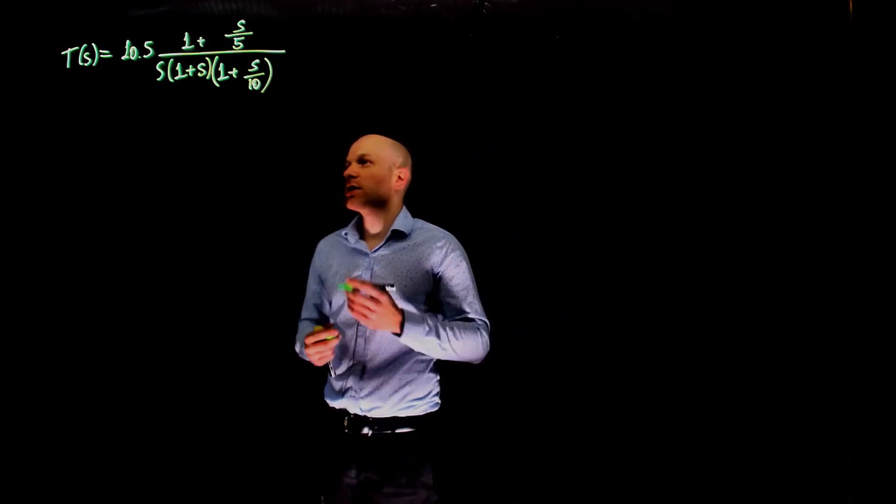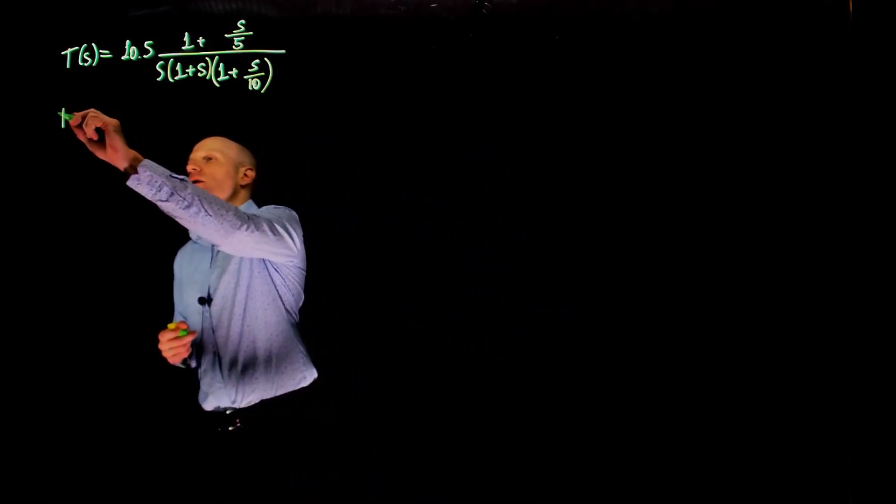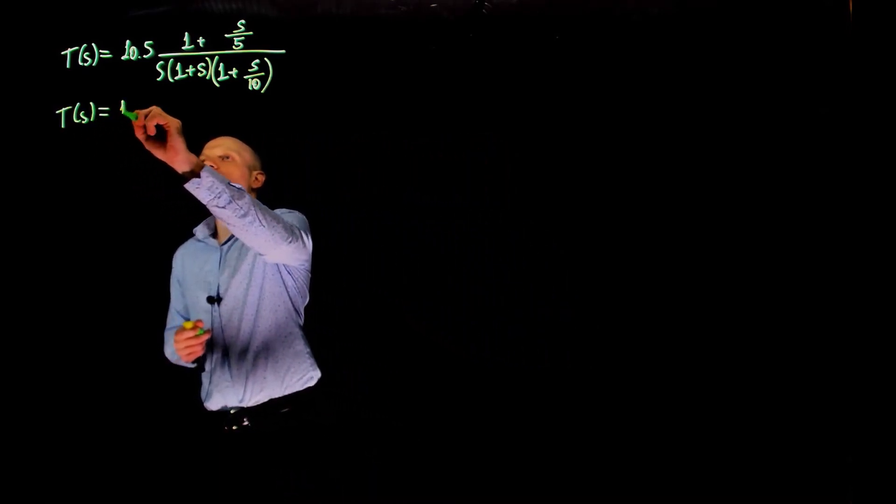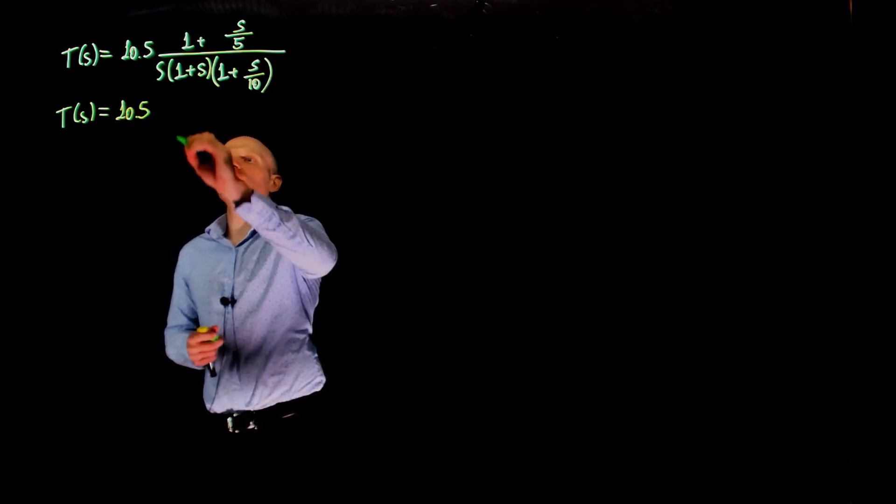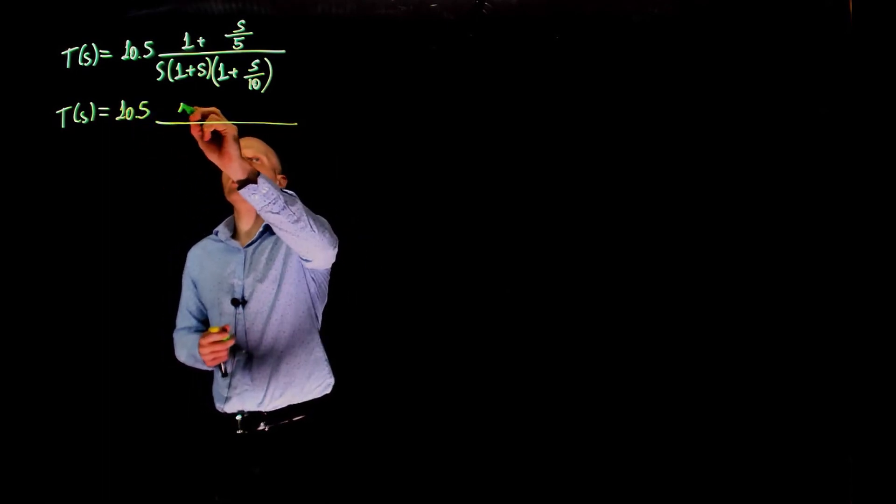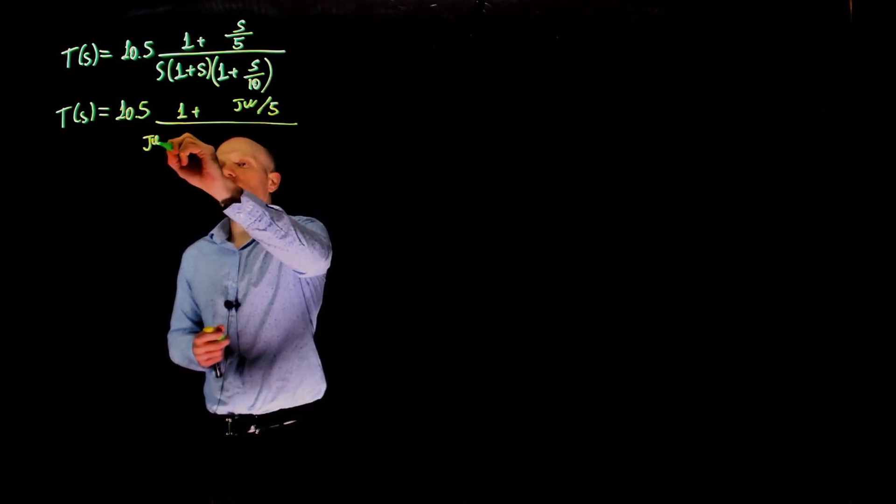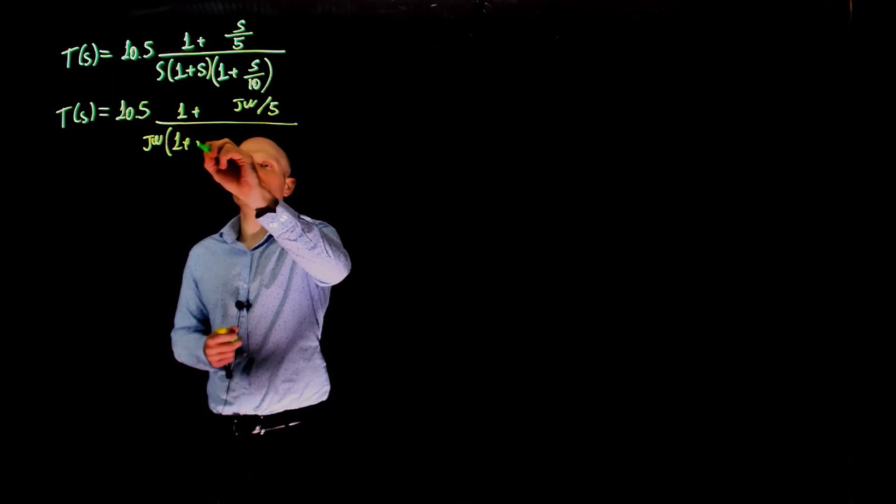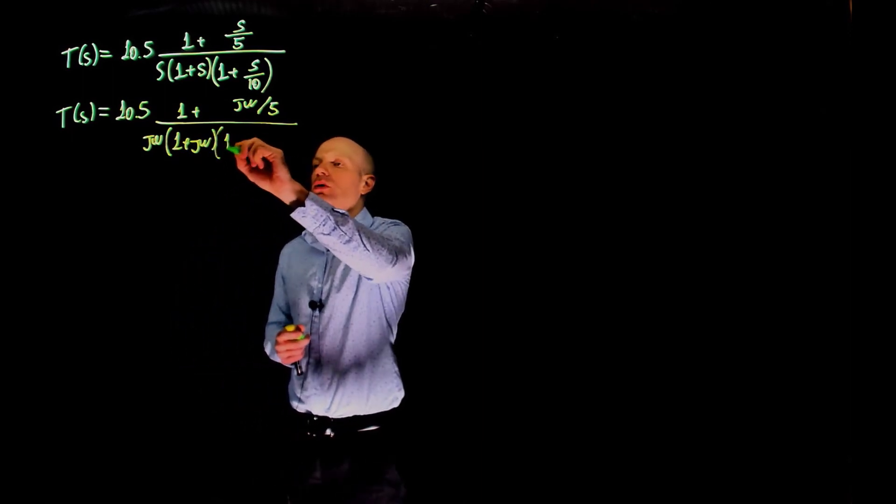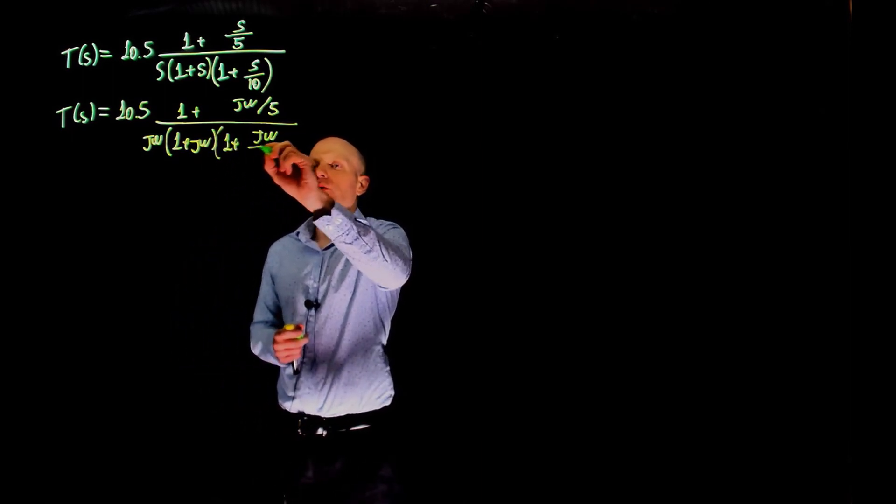We can rewrite T as a function of j omega. T becomes 10.5 divided by (1 plus j omega over 5) times j omega times (1 plus j omega) times (1 plus j omega over 10).